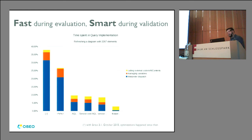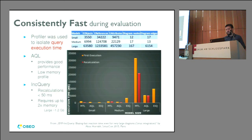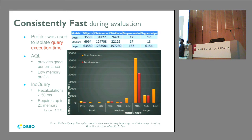Here's a benchmark of AQL compared to other query engines included in Sirius: Acceleo MTL, Acceleo 2, AQL, direct service (direct Java call), and feature (direct attribute access). The diagram shows there's no reason not to use AQL for any Sirius use case. The Incquery labs also did a performance benchmark in 2015, comparing MTL, AQL, and Incquery. AQL outperformed even Incquery on the first evaluation. Incquery gets better subsequently due to caching and impact analysis, but AQL still performs well and uses no extra memory.